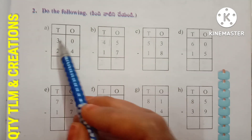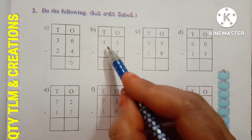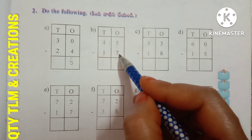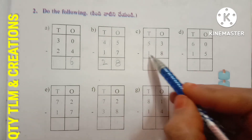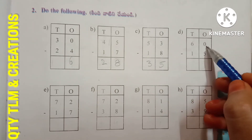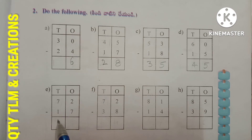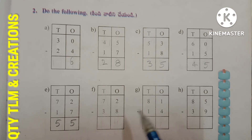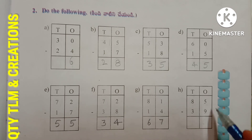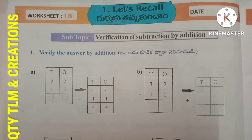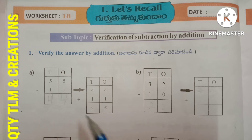Next: do the following. A) 30 minus 24 gives 6. B) 45 minus 17 gives 28. 53 minus 18 gives 35. 60 minus 15 gives 45. 72 minus 17 gives 55. 72 minus 38 gives 34. 81 minus 14 gives 67. 85 minus 39 gives 46.